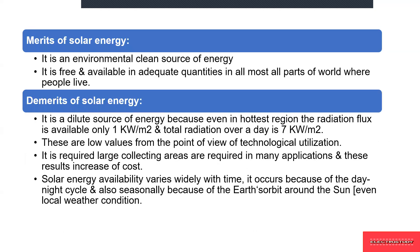Before seeing the demerits and merits of solar energy, we will look at how solar energy is generated. The solar energy is actually created by nuclear fusion taking place in the sun. Fusion occurs when the protons of hydrogen atoms collide in the sun's core and fuse with helium atoms. Because of that reaction, an enormous amount of energy is released to the earth. So to be clear, solar energy is generated by the nuclear fusion reaction taking place in the sun.